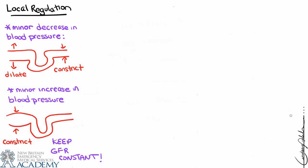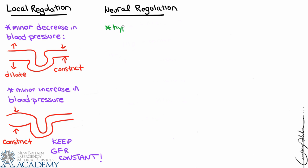Assuming no major malfunction, we want to ensure the kidneys filter continuously. In terms of perfusion hierarchy, the brain, heart, and lungs are prioritized, with the kidneys fourth — they absolutely need a constant blood supply and constant maintenance of GFR. Without it, we are likely to develop homeostatic imbalances and numerous complications.